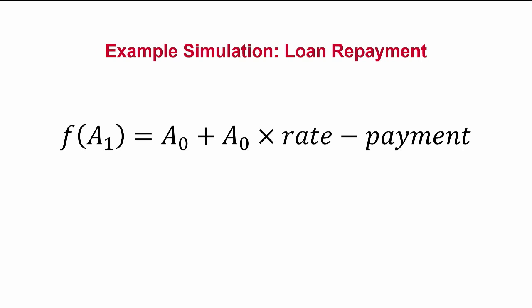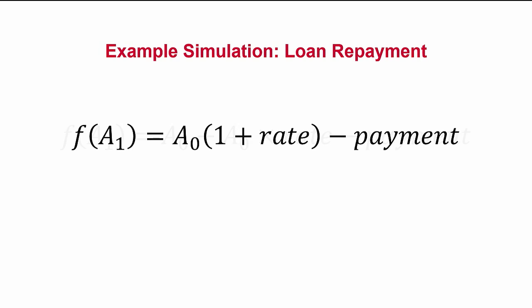We can calculate a formula to represent the amount we owe in the first month. This represents the initial amount of the loan, plus the interest for the month, minus the payment for that month. Factoring out the amount, we get this.